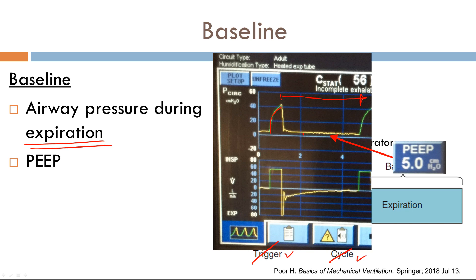When assessing the exhalation phase on a ventilator, there are a few things you want to keep in mind. During the exhalation phase, watch the flow, and you want the flow to reach zero before the next breath is triggered. If you have a situation where the flow does not reach zero before the next breath is triggered, you run the risk of having excess volumes in the lung.